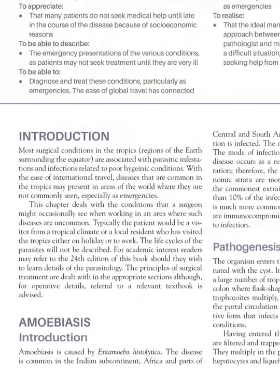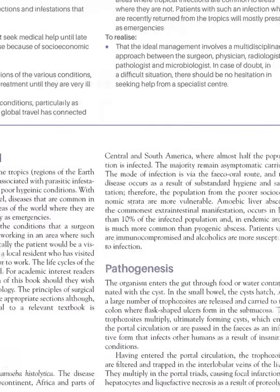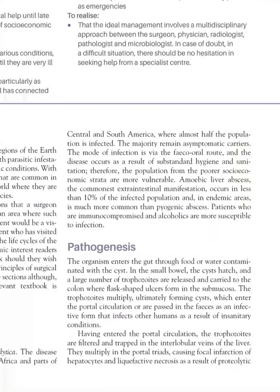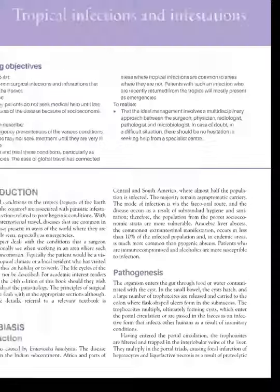First is amoebiasis, which is caused by Entamoeba histolytica and the mode of infection is the fecal-oral route. In pathogenesis, it goes into the gut via the cyst form, and in the small bowel the cyst hatches. In the colon, Entamoeba forms flask-shaped ulcers, then passes through the portal circulation to the liver, causing amoebic liver abscess.